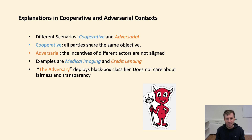In an adversarial decision-making problem, in contrast, the incentives of the different actors are not aligned. A well-known example is a loan application, where the applicant and the bank have different interests. The applicant wants to get a loan with a small interest rate, while the bank simply wants to earn money. Importantly, whether a decision-making context is cooperative or adversarial has nothing to do with whether we use an algorithmic decision aid or not. This simply depends on the social context and the incentives of the different actors.